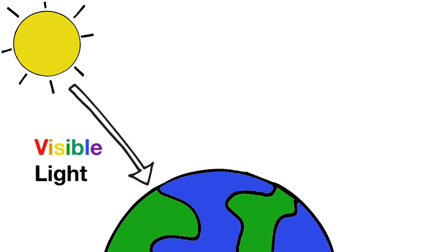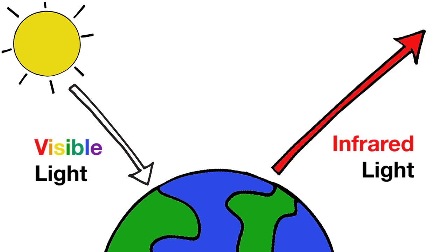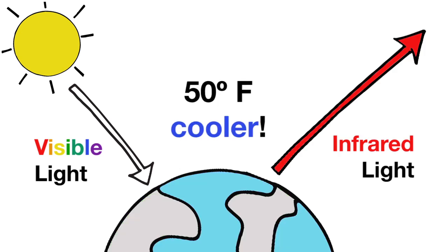Without this greenhouse effect, caused by these greenhouse gases in the atmosphere, the earth's average surface temperature would be about 50 degrees Fahrenheit cooler, which is well below the freezing point for ice.